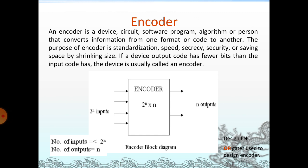This is the encoder circuit. An encoder is a device, circuit, software, program, or algorithm that converts information from one format or code to another. The purpose of an encoder is standardization, speed, secrecy, security, or saving space by shrinking size. If a device's output code has fewer bits than the input code, the device is called an encoder. Number of inputs: 2^n; number of outputs: n. There are no selection lines — only input and output.